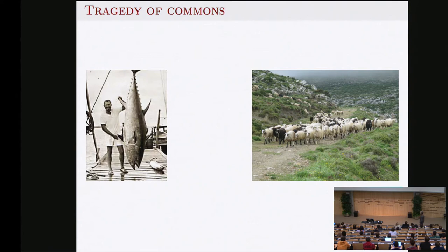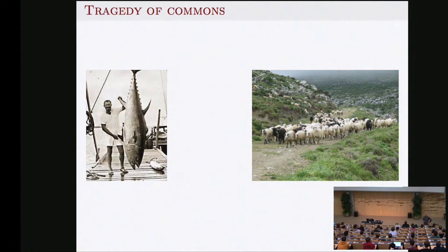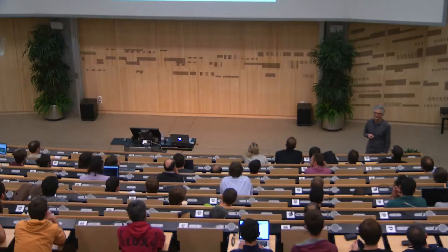One final game-theoretic issue: the tragedy of the commons. Over-exploitation — we fish a lot, destroy our environment. It's good for us individually in the short term, but in the long run if everybody takes everything, there will be no fish and nothing on the land. This is a game we have to learn how to play — you have to be less greedy. Being good is actually good for us. Thank you.